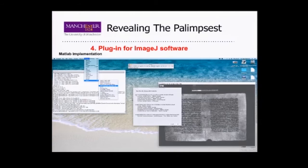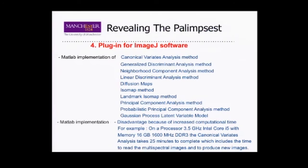This is a print screen of the ImageJ software with the plugin. There is a menu — you go to the dimensionality reduction task submenu, and from there you select one of the dimensionality reduction methods written in MATLAB or in C. The canonical variates analysis method in MATLAB for page 102 is considered to be a very good result. However, the disadvantage of the MATLAB implementation is computational time. On a 3.5 GHz Intel Core i5 processor with 16 gigabytes of memory, the canonical variates analysis method took 25 minutes to complete, including the time to read the multispectral images and produce the new images.